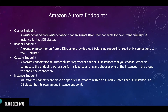Our last endpoint is the instance endpoint. This type of endpoint connects to a specific DB instance, giving you direct control over the connection to the DB cluster. It can be used for scenarios where the cluster endpoint or reader endpoint might not be appropriate. For Amazon Aurora multi-master, your application typically has logic to load balance between all DB instances using instance endpoints for all connection operations. In single master, you have the cluster and reader endpoints handling everything, so the instance endpoint is rarely used.